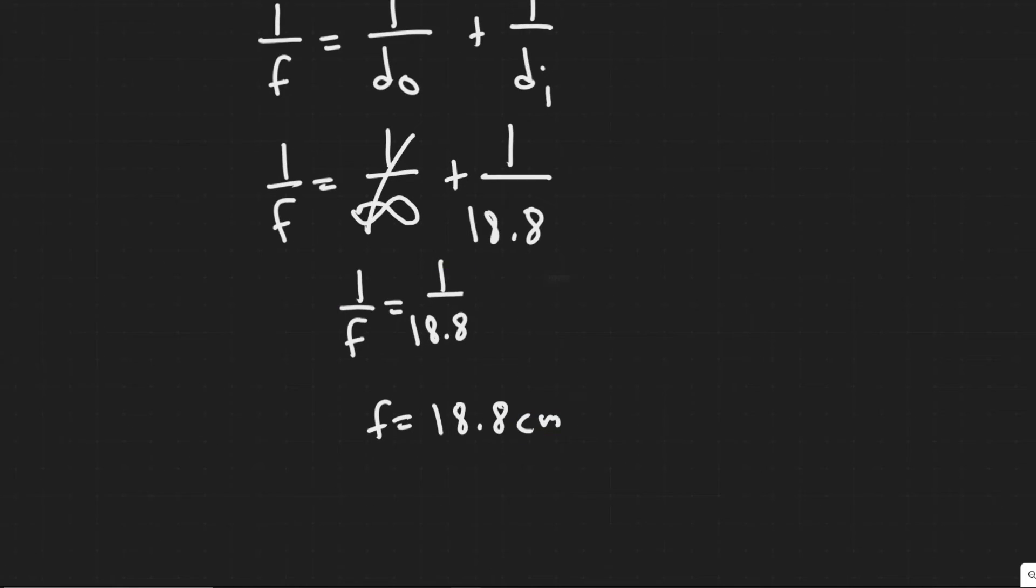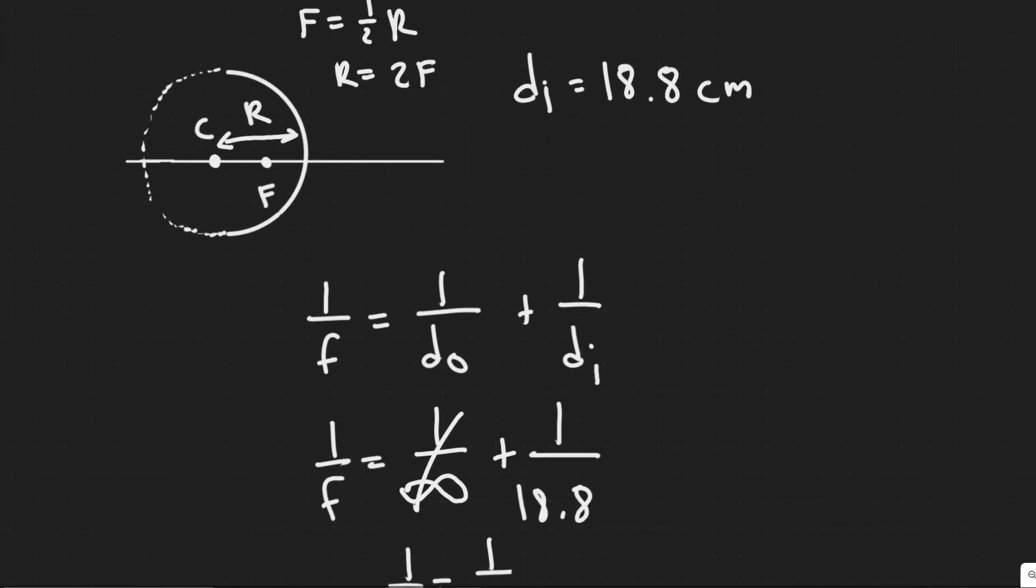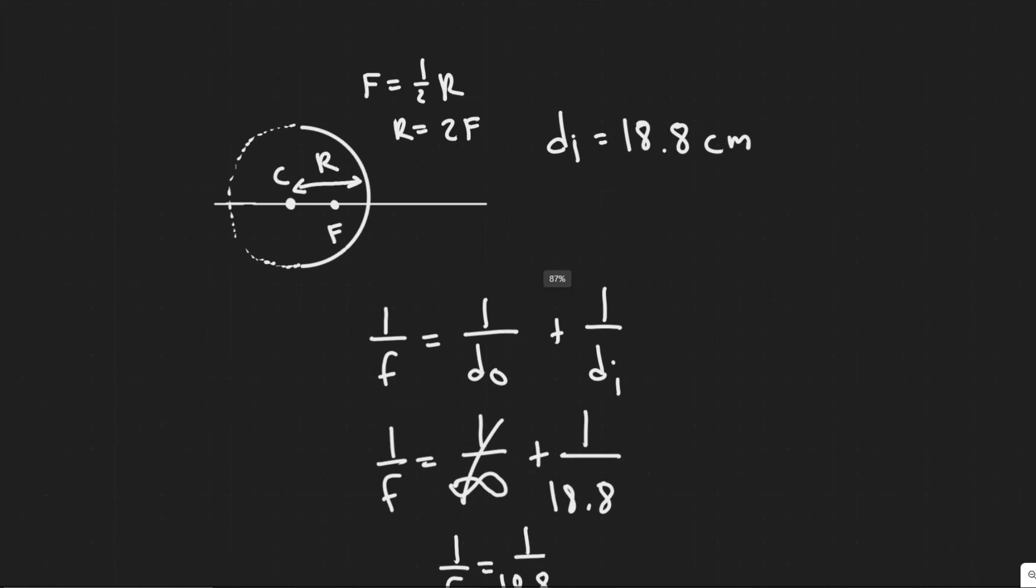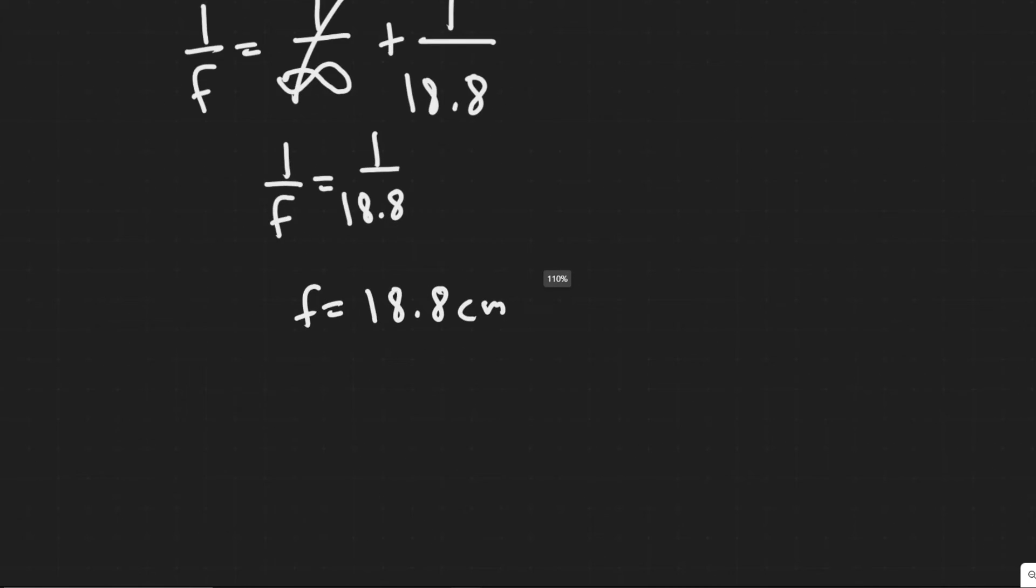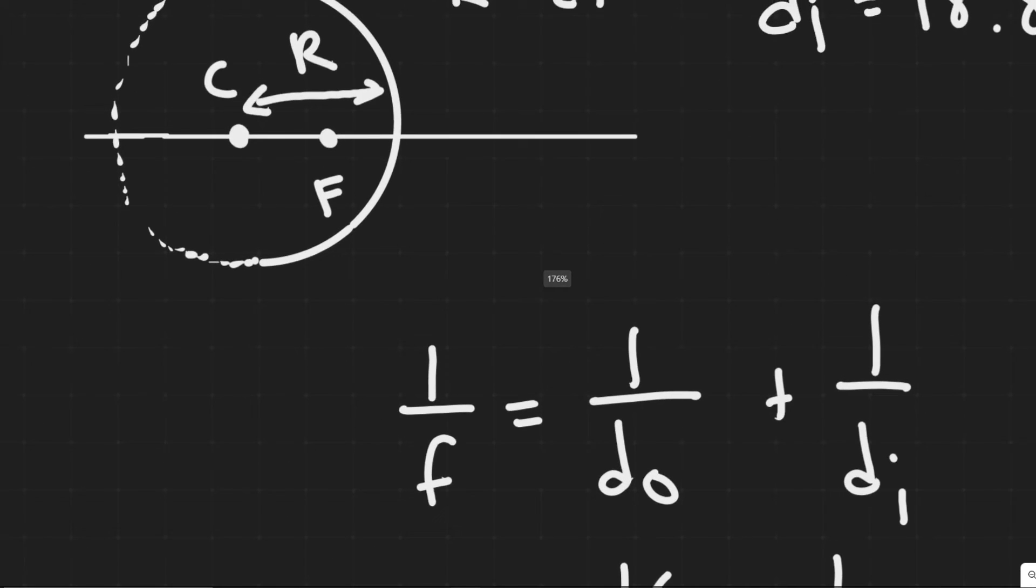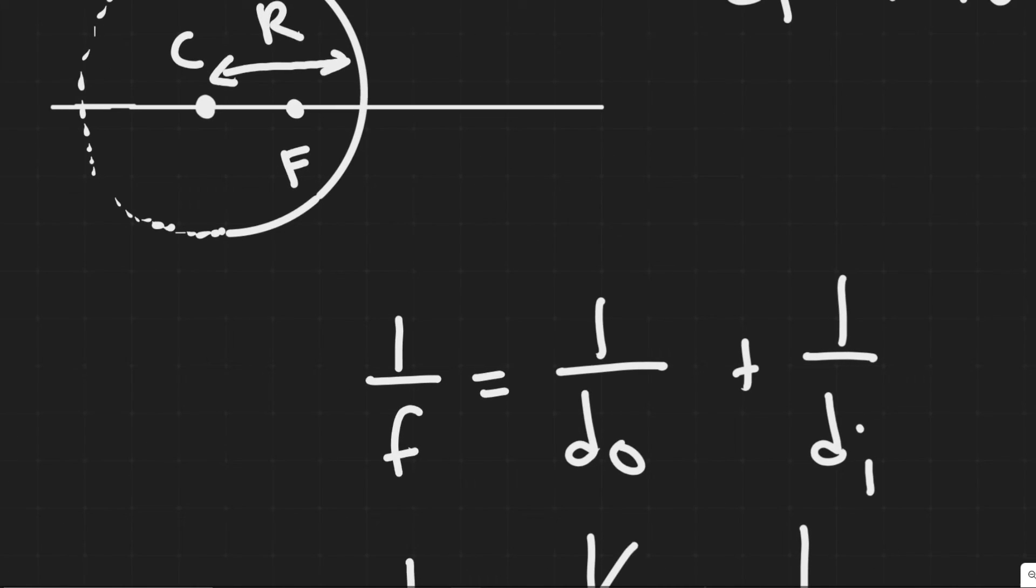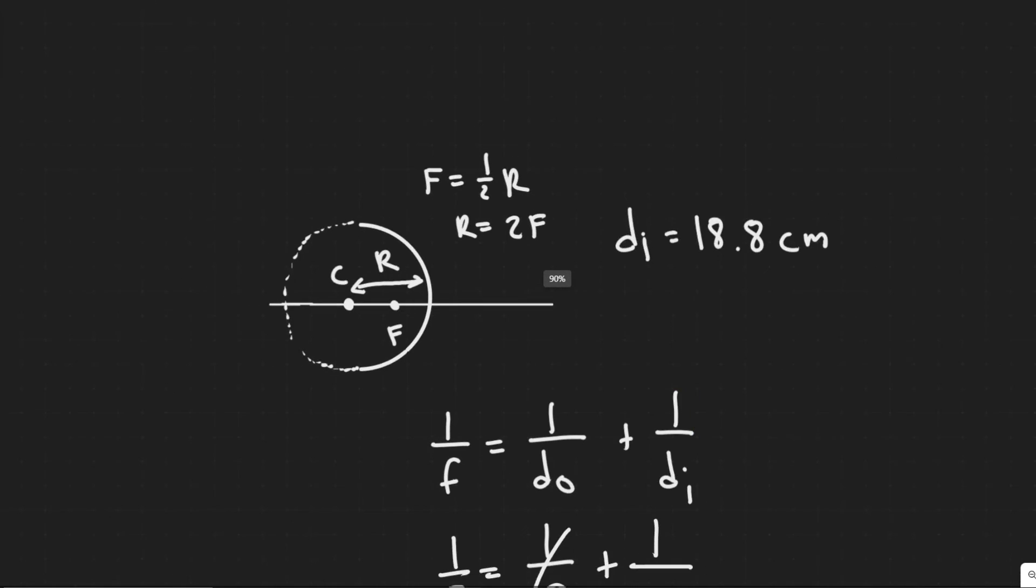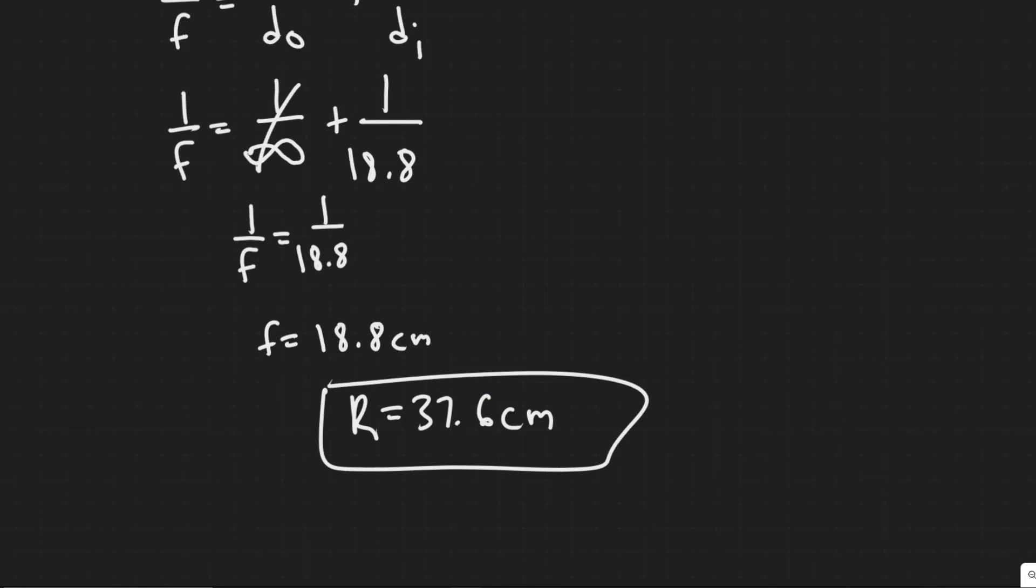So our focal length in this case is just equal to D I or the distance between the image and our mirror. So we know our F value and then to find R, you would just multiply it by two. So 18.8 times two is 37.6, keep in mind our units are centimeters. So 37.6 centimeters, that's the distance or the radius of our spherical surface or your radius of curvature. So this is going to go ahead and be your answer.